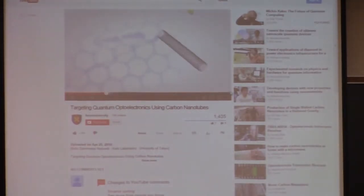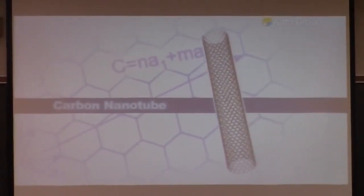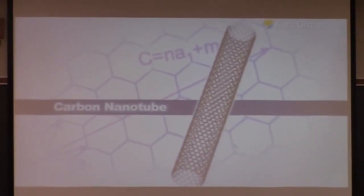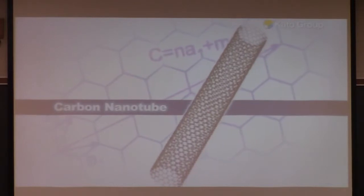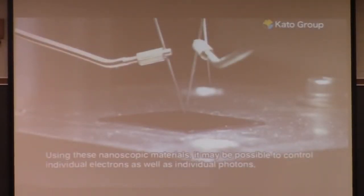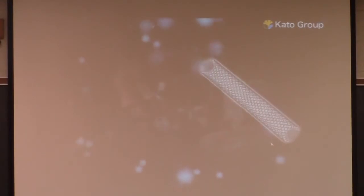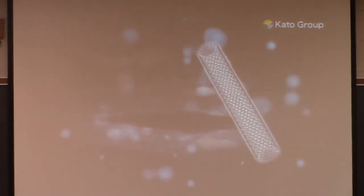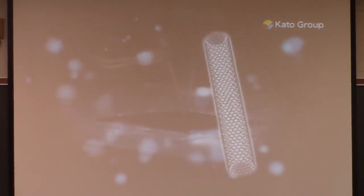Carbon nanotubes can exhibit metallic or semiconducting properties. In particular, the semiconducting nanotubes are direct-gap semiconductors that exhibit excellent optical properties. Furthermore, nanotubes are only several nanometers in diameter. Communication is a technology of the future, and the key to that technology may be carbon nanotubes with a diameter of just several nanometers.